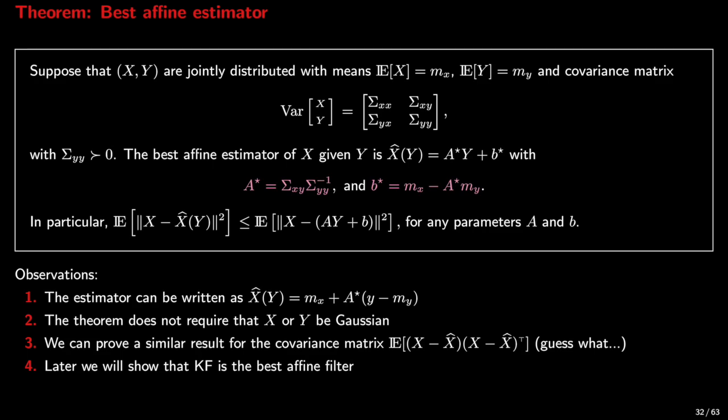Just a few observations before we move on. Firstly, the best affine estimator can be written in a form that makes it evident how it works and that it is unbiased. Note that the theorem does not require that x and y be normally distributed. It states a fact about the mean squared error, but we can show a similar result for the covariance matrix of the error. We will later use this theorem to show that the Kalman filter is the best affine estimator of x_{t+1} using measurements available up to time t.